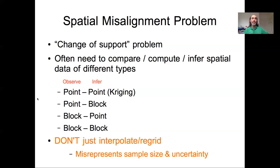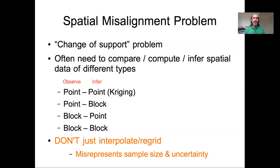You have data at one set of points and you need them at a different set of points, so you could just interpolate those and use those interpolated values. Well, that can be really dangerous because it can misrepresent the sample size of data that you actually have, and it can misrepresent the uncertainties you have about those. One of the key advantages of Kriging was that it provides us an estimate of not just the value at a location, but the variance associated with that spatial interpolation.